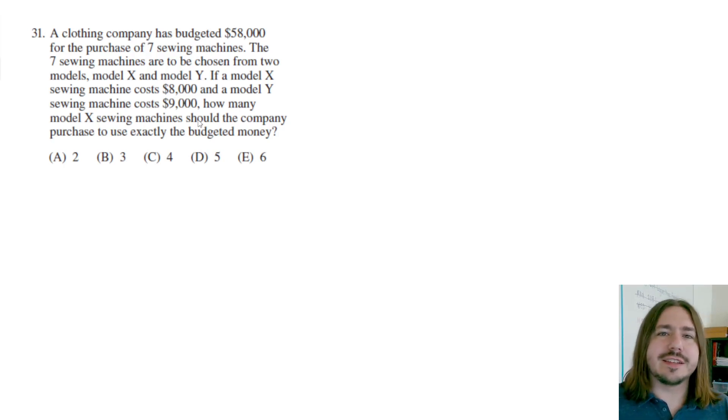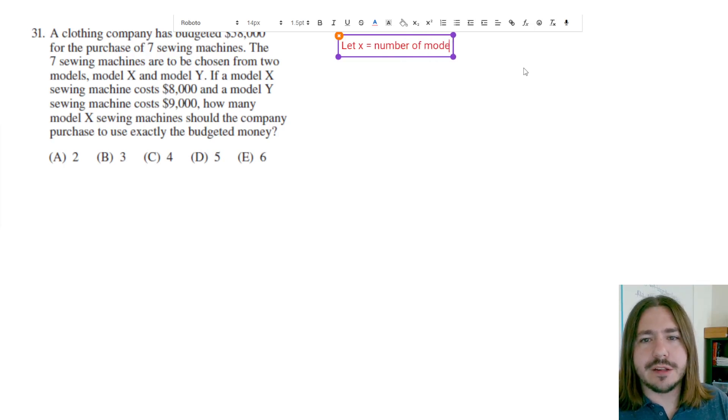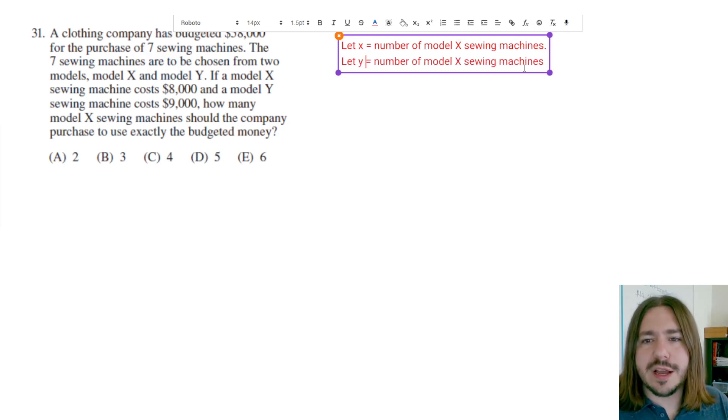So this is a classic system of equations problem where you're going to write two equations and try to solve the system, meaning you're going to try to find typically both the value of both variables X and Y, but in this problem we only need to find X. So first let's define our variables. We'll let X represent the number of Model X sewing machines, and we'll let Y be the number of Model Y sewing machines.